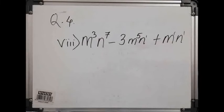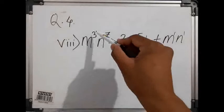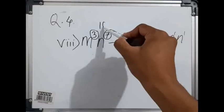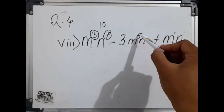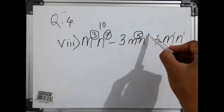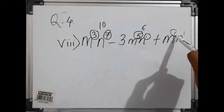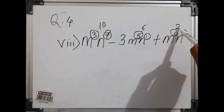We have 3 terms. As we know, degree of a polynomial means the highest power of the variable. Since here there are 2 variables, m and n, we need to add the power of both variables. So this is 3 and 7, if we add we get 10. Here we have 5 and 1, if we add we get 6. Here, if we add the powers we get 2.